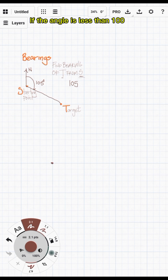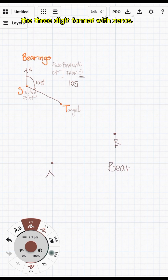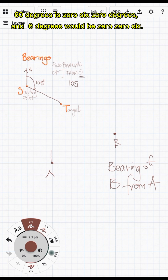If the angle is less than 100 degrees we still maintain the three-digit format with zeros. So 60 degrees is written as 060 degrees, and 6 degrees would be 006.